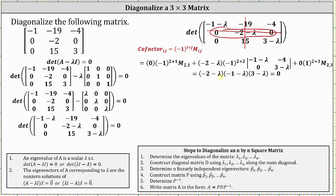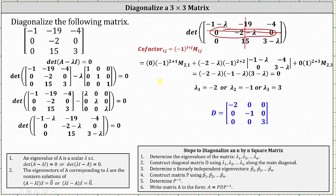Since negative one to the fourth power equals positive one, we are left with negative two minus lambda times the product of negative one minus lambda and three minus lambda, minus four times zero — which simplifies to just the product of negative one minus lambda and three minus lambda. The determinant is already factored and set equal to zero, giving eigenvalues: lambda sub one equals negative two, lambda sub two equals negative one, and lambda sub three equals positive three. We now have the information needed to form diagonal matrix D with these eigenvalues along the main diagonal and all other entries zero.